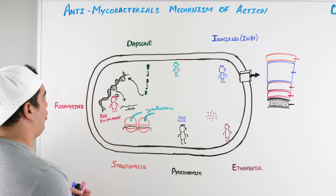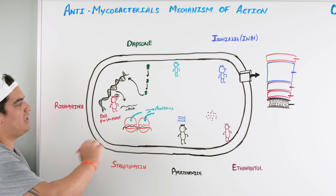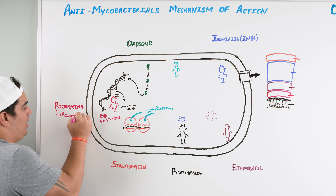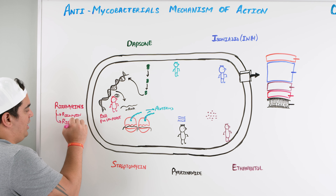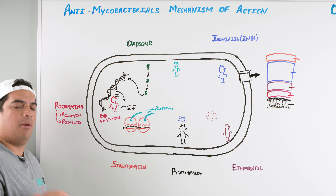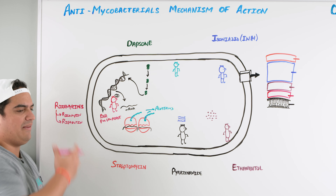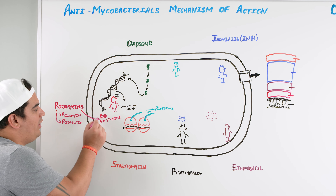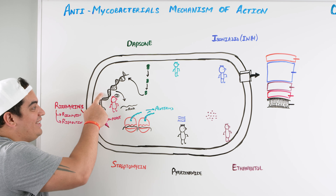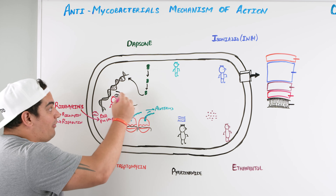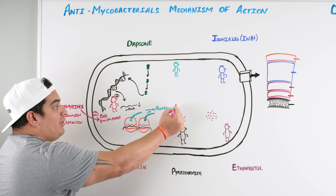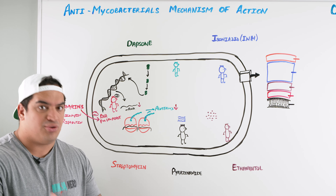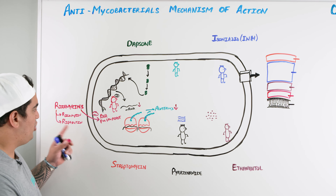If we give rifamycins — specifically rifampin, the most commonly utilized one, and rifabutin — these drugs inhibit the RNA polymerase. Rifabutin is used more commonly in MAC infections, particularly in HIV-positive patients, because rifampin causes a lot of interactions with the CYP450 system. If you inhibit RNA polymerase, you can't convert DNA into mRNA, so less mRNA forms, less proteins are made, and since proteins are integral to mycobacterial structure and function, the bacteria will die.